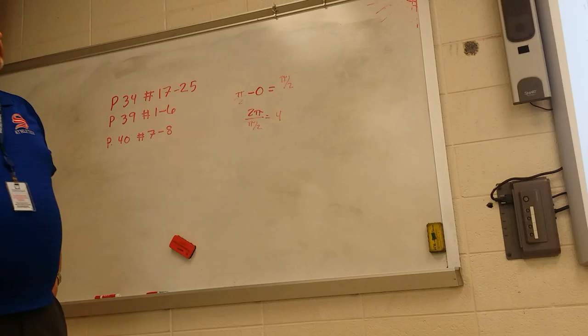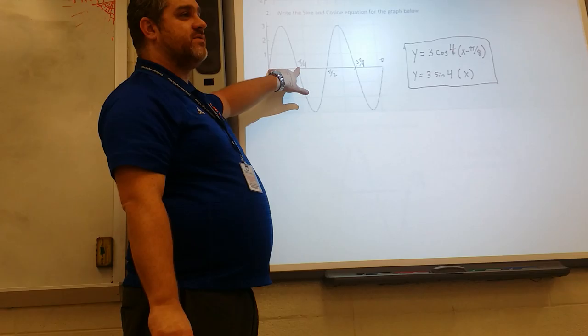For cosine, it starts at the top. If this point is pi over 4, and that's 0, we want halfway between 0 and 1 fourth. Halfway between 0 and 1 fourth would be 1 eighth.